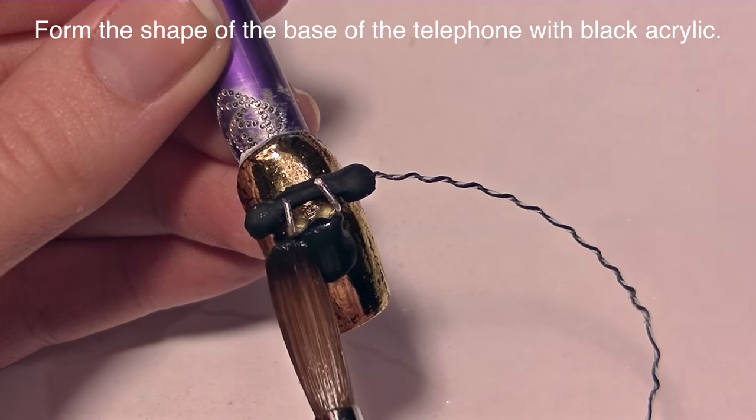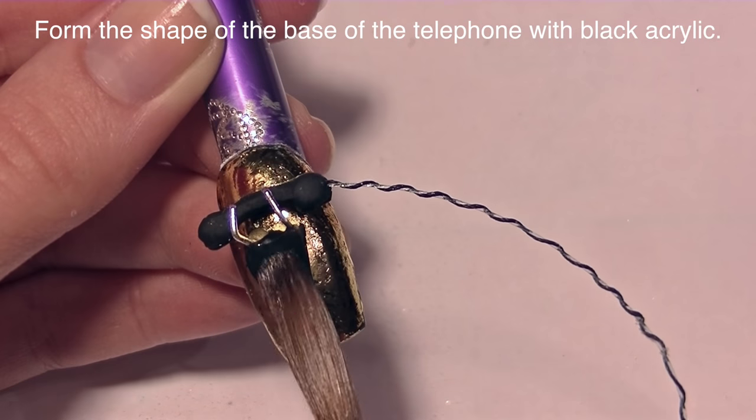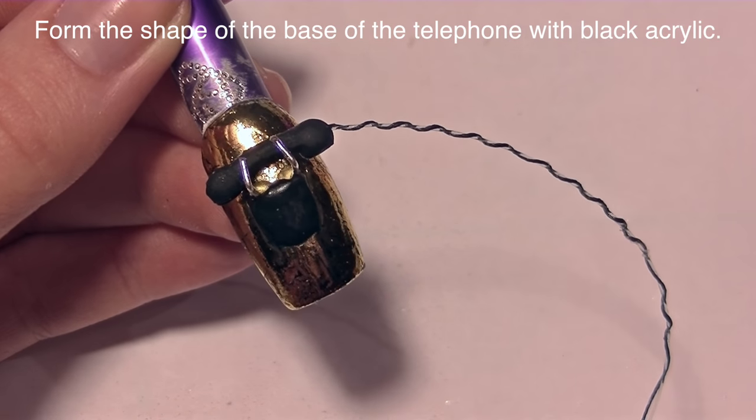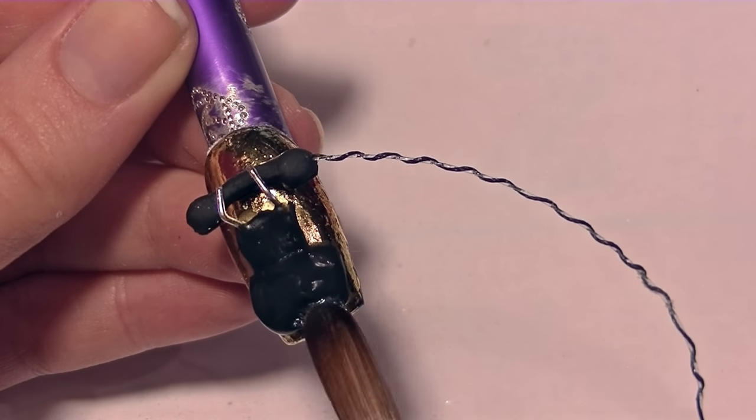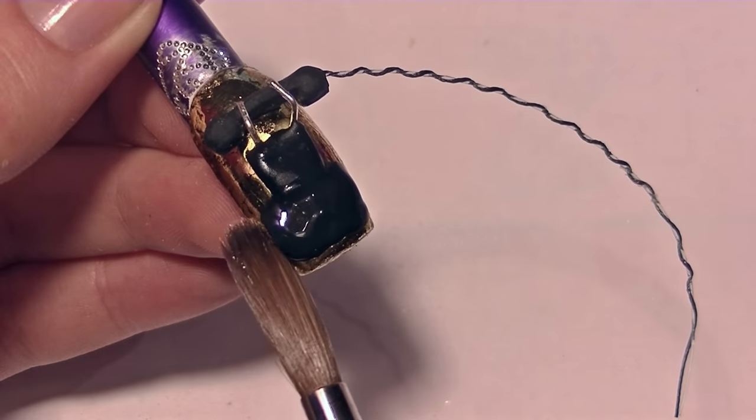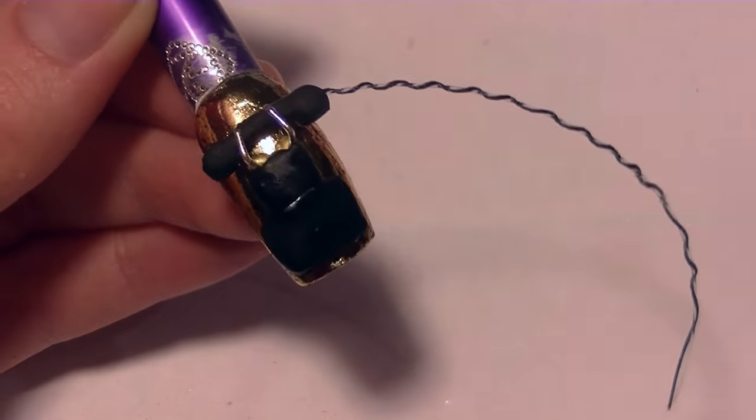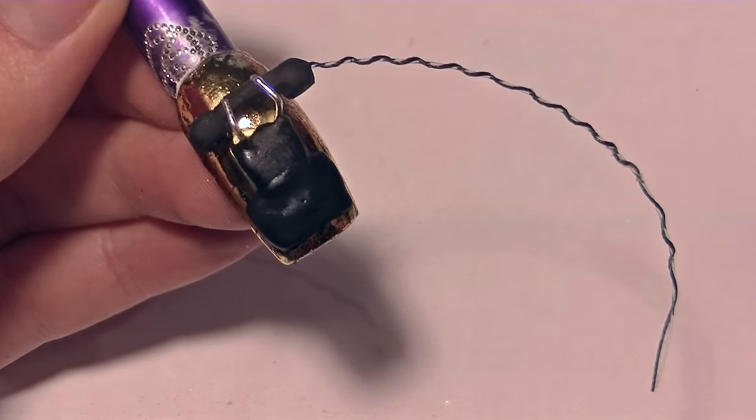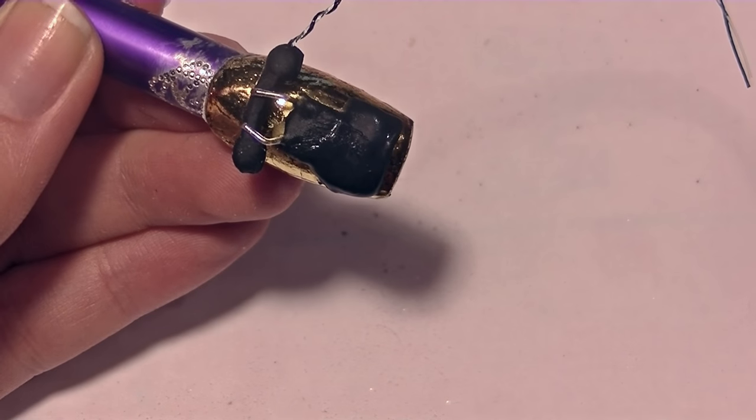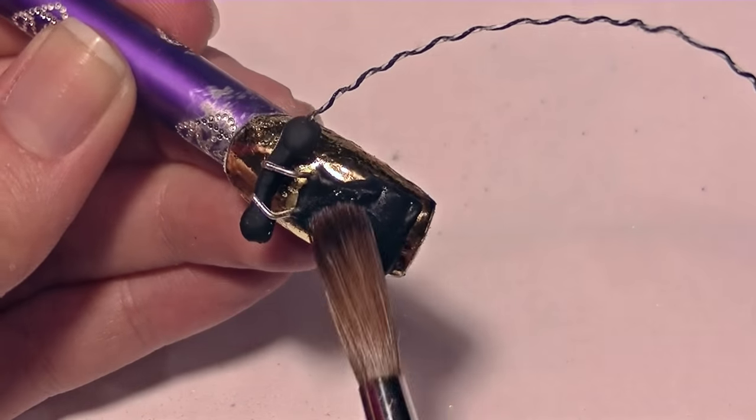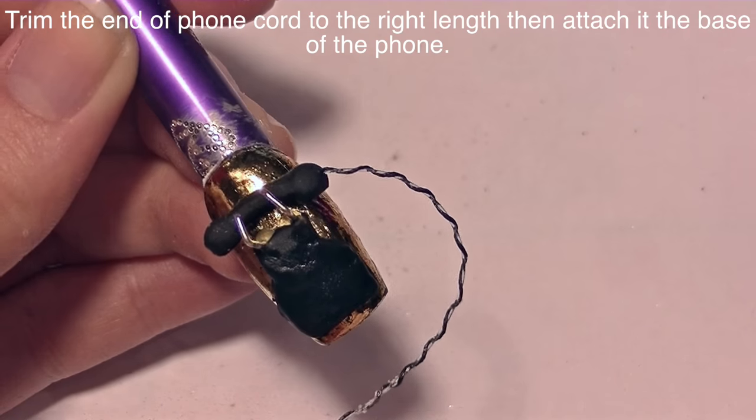Once they are set, you're going to want to make the base of the phone. I'm going to start with black acrylic and make that first part that goes up and would hold the phone, and then create the part that would sit on the table with more black acrylic. Right now I'm not worrying about making sure it's the right thickness or exactly the right shape. I'm just making a vague outline of it to make sure I'm going in the right direction. So we have two rectangles and I'm just sort of blending them together and smoothing them out.